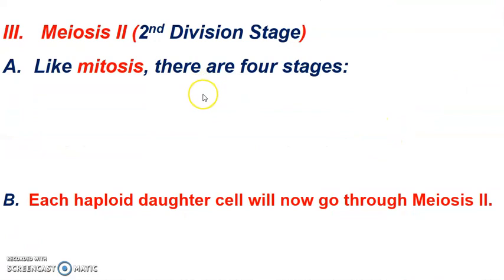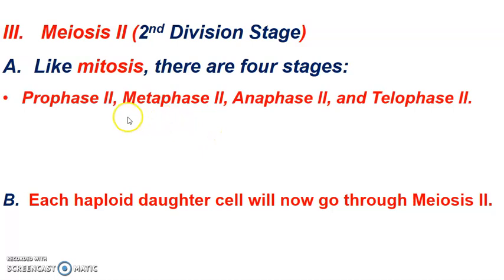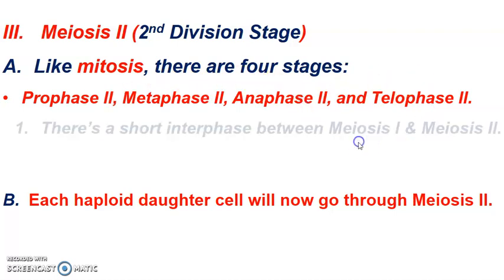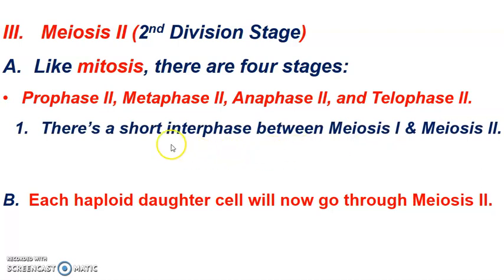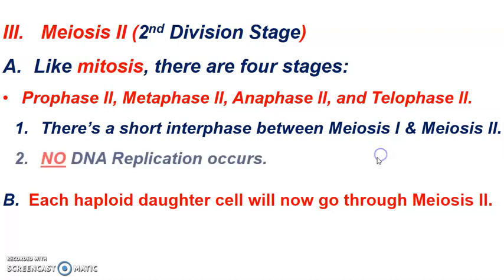So we need to go through a second division stage in order to split those sister chromatid pairs. Meiosis II is going to be very similar to both mitosis and meiosis I. We're going to have PMAT happening once again — prophase, metaphase, anaphase, and telophase — but we're going to put a two designation after each phase. There is a short interphase period that happens between meiosis I and meiosis II, but there will be no DNA replication occurring like there was in the first interphase.